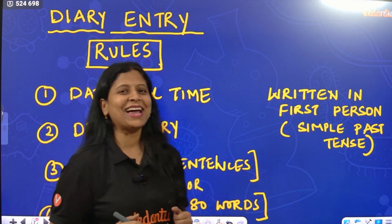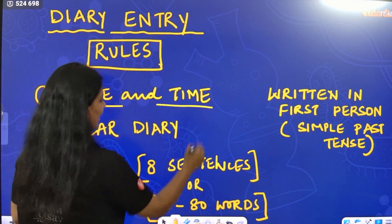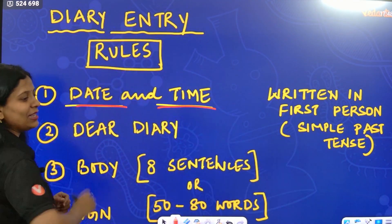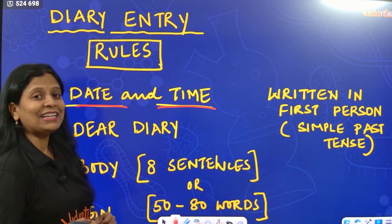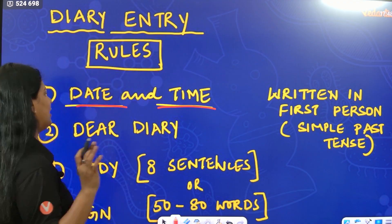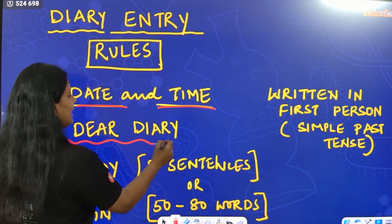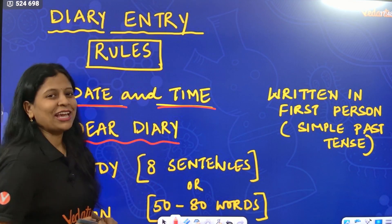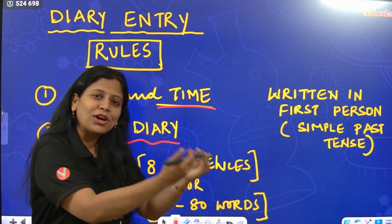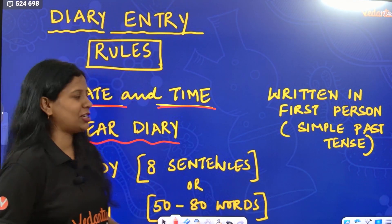Diary entry. First, rule number one: date and time. If you want to write the diary entry, then date and time must be mentioned. Next — Dear Diary. You are writing your own feelings to your diary. Dear Diary is your salutation.